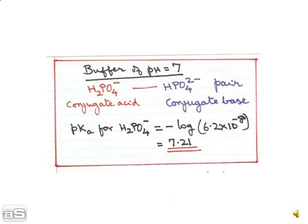Now let us take the example of a buffer of pH 7. We choose H2PO4 minus and HPO4 2-minus pair for preparing this buffer. H2PO4 minus is the conjugate acid and HPO4 2-minus is the conjugate base. Now the pKa value for H2PO4 minus is equal to minus log of the dissociation constant, and that value is 6.2 into 10 to the power of minus 8. So the pKa value for H2PO4 minus is coming out as 7.21.